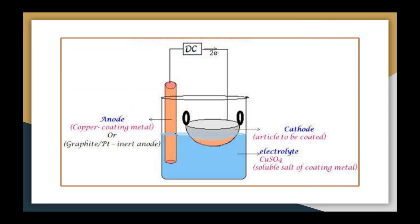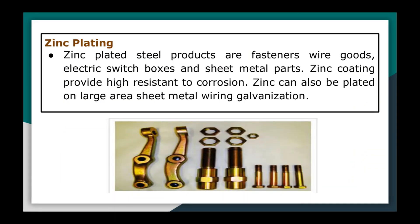Electroplating can be done with different metals. First is zinc plating — zinc-plated steel products include fasteners, wire goods, electric switchboxes, and sheet metal parts. Zinc coating provides high resistance to corrosion. Zinc can also be plated on large-area sheet metal using the galvanization process.